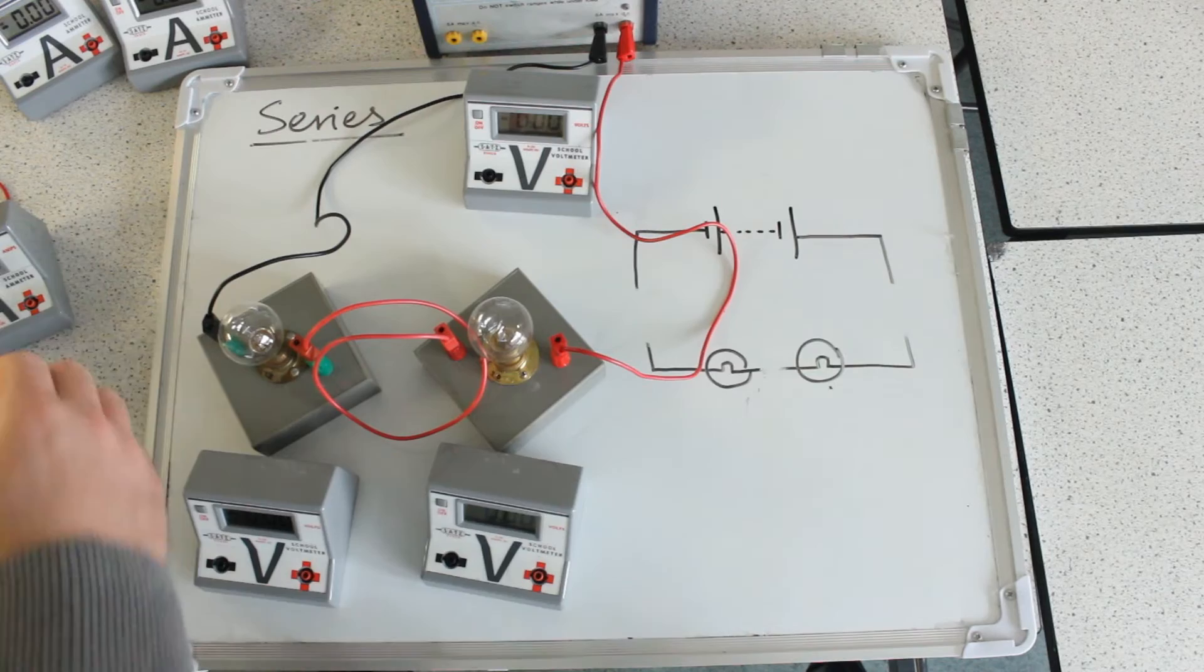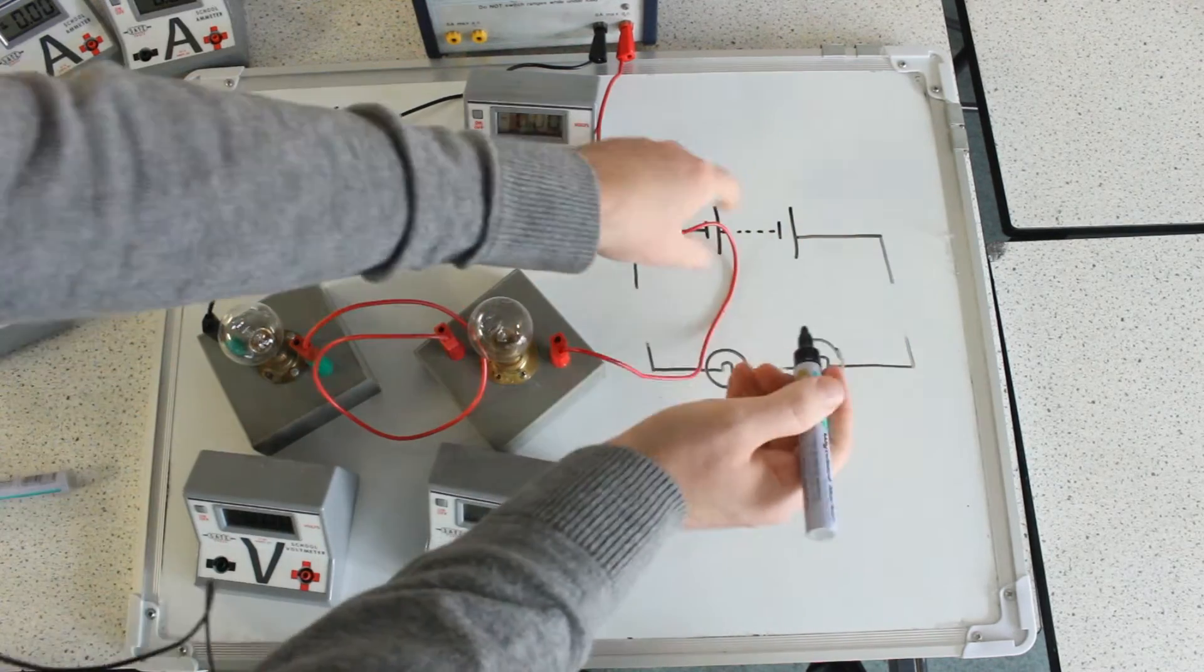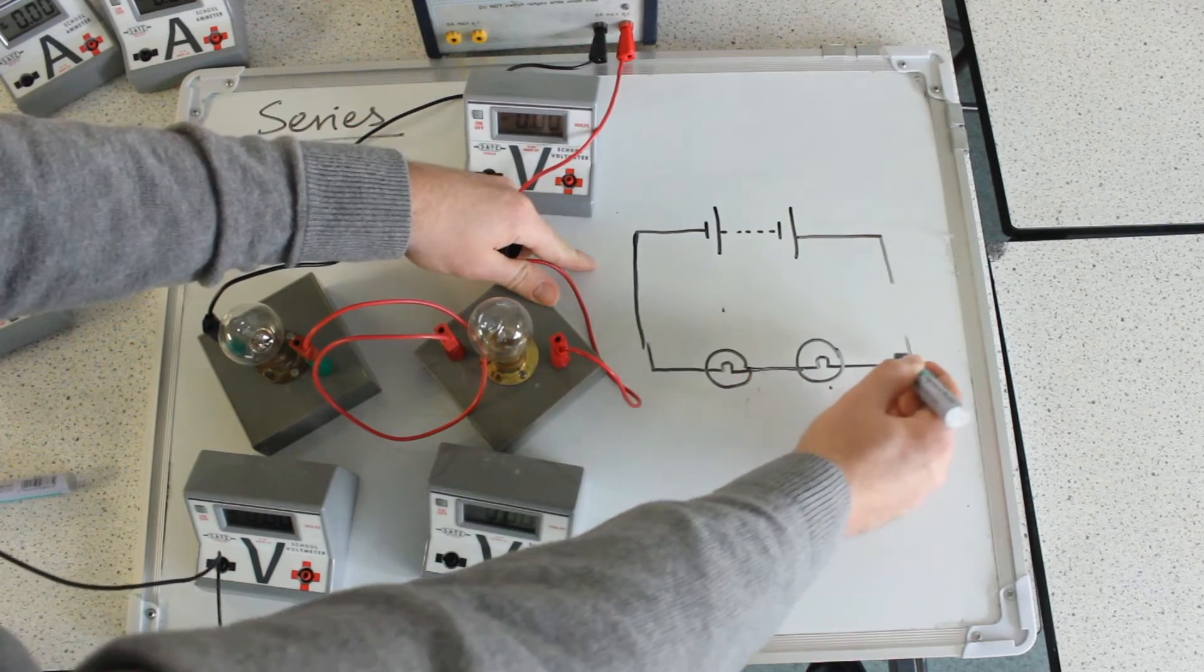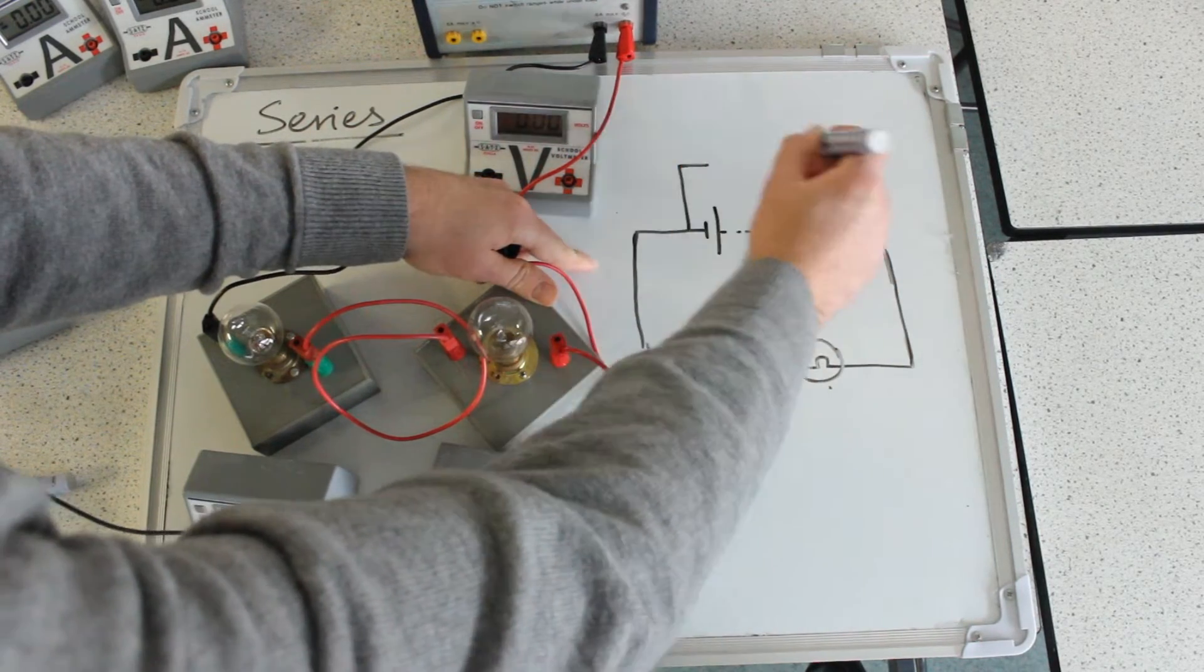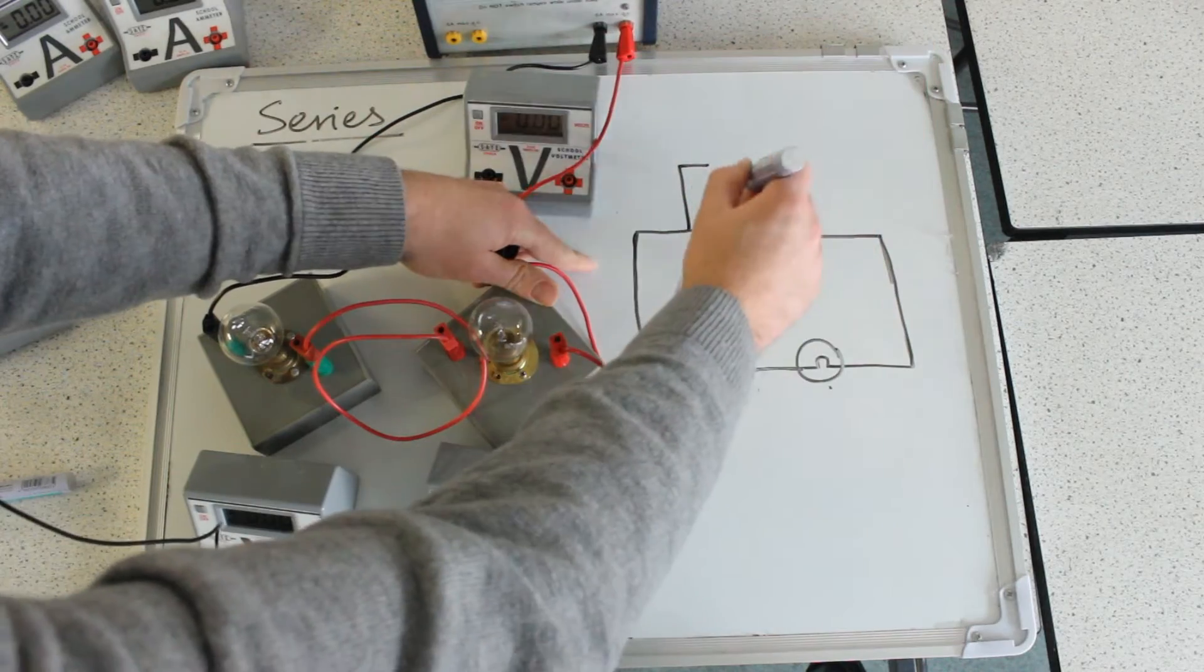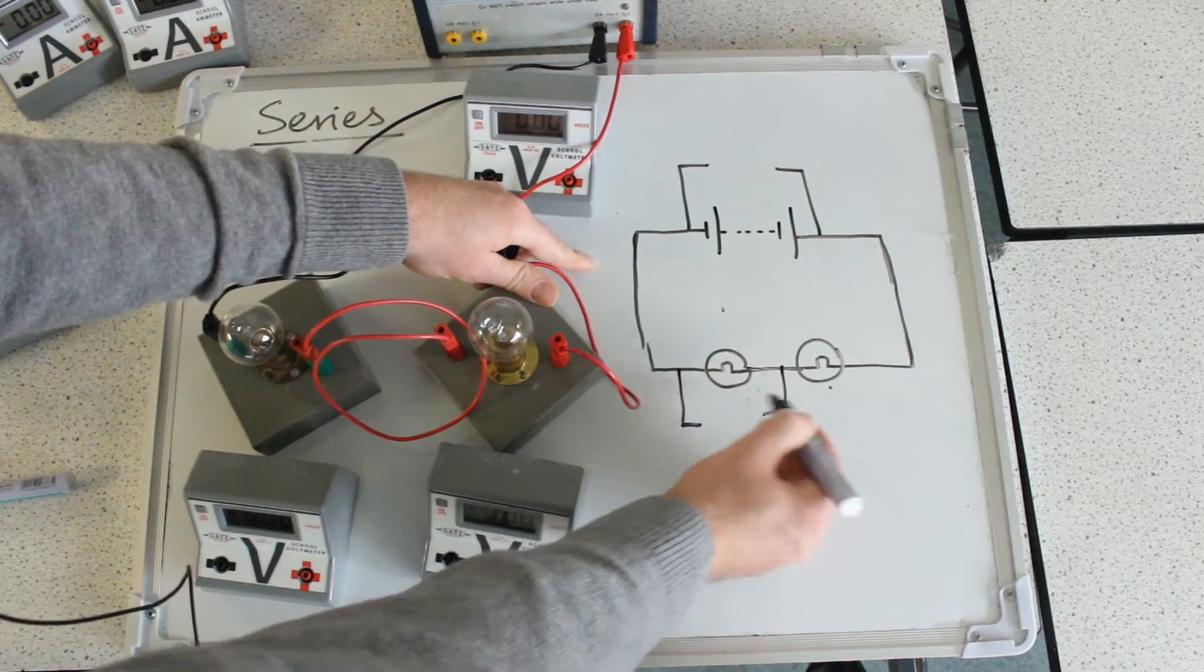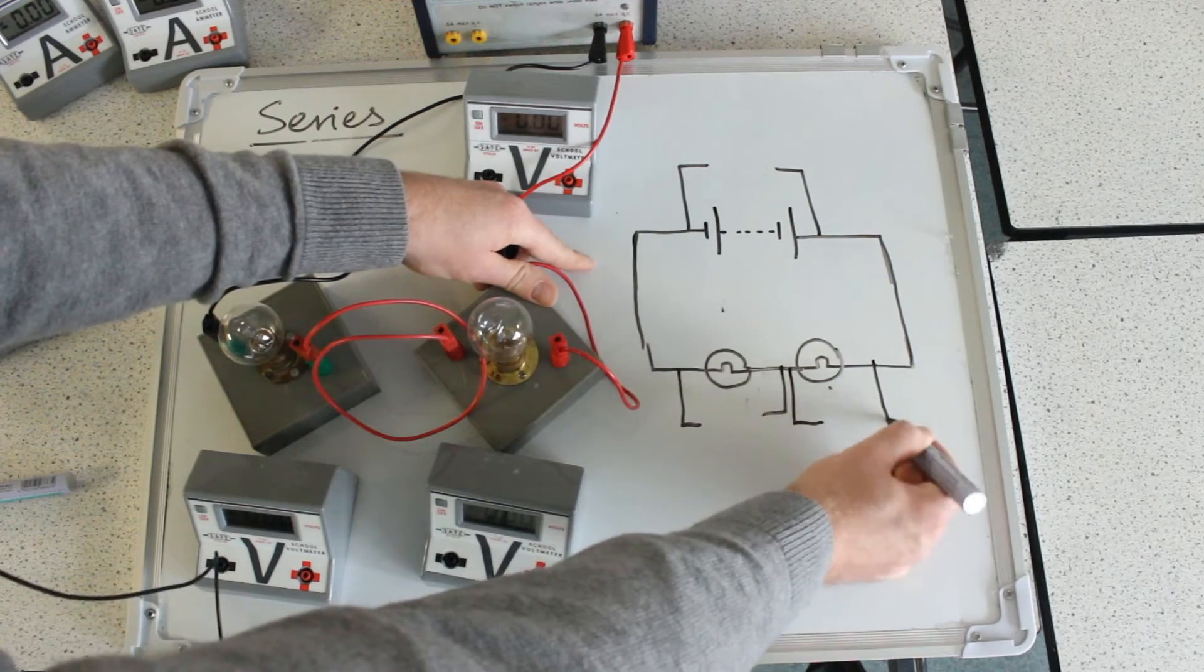Voltmeters always go across the components you're measuring. So I'm going to place a voltmeter across here, measure that, a voltmeter here, measure the voltage there, and across this bulb as well.